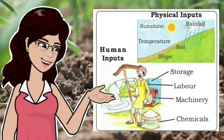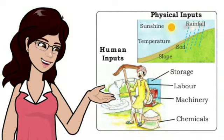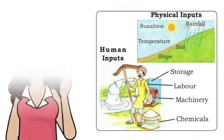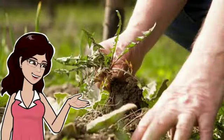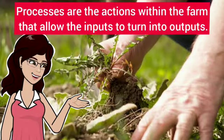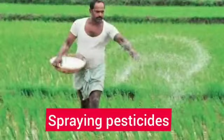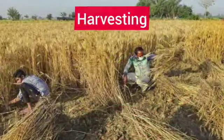All these inputs are essential to perform agricultural activity. The next step is to use these inputs to get output — that is called processes. Processes are the actions within the farm that allow inputs to turn into outputs. These include sowing seeds, spraying pesticides, irrigating fields, weeding, and harvesting. Finally, we get outputs in the form of agricultural products such as crops, wool, dairy, and poultry products.